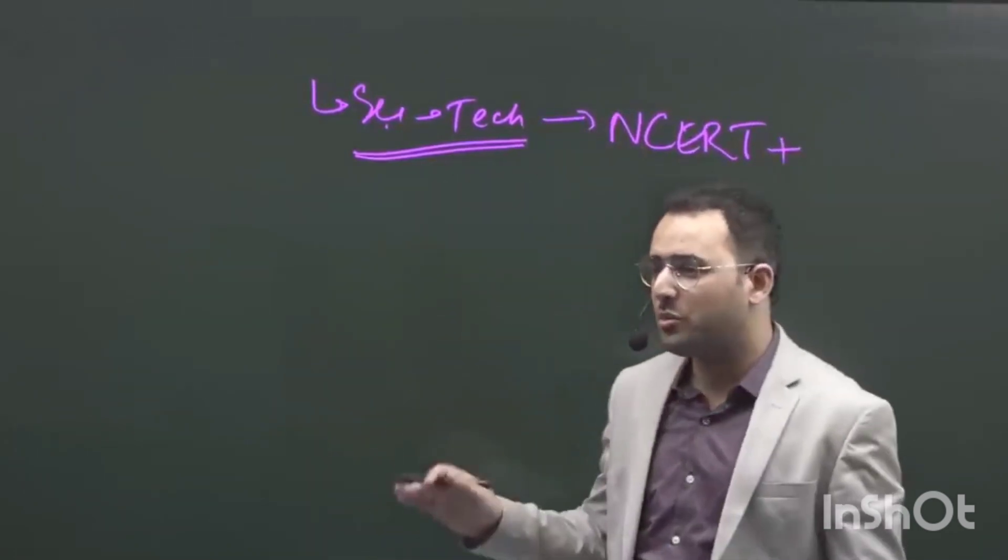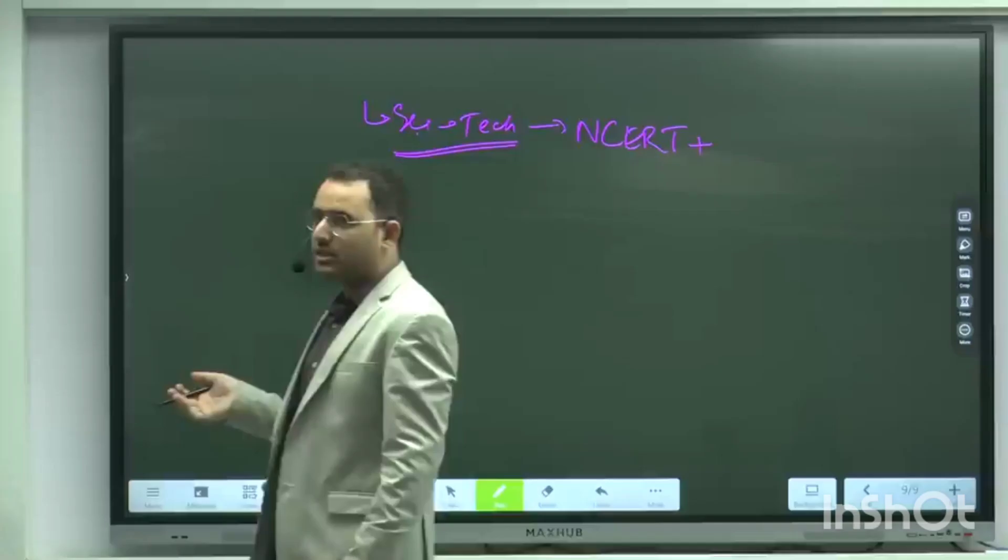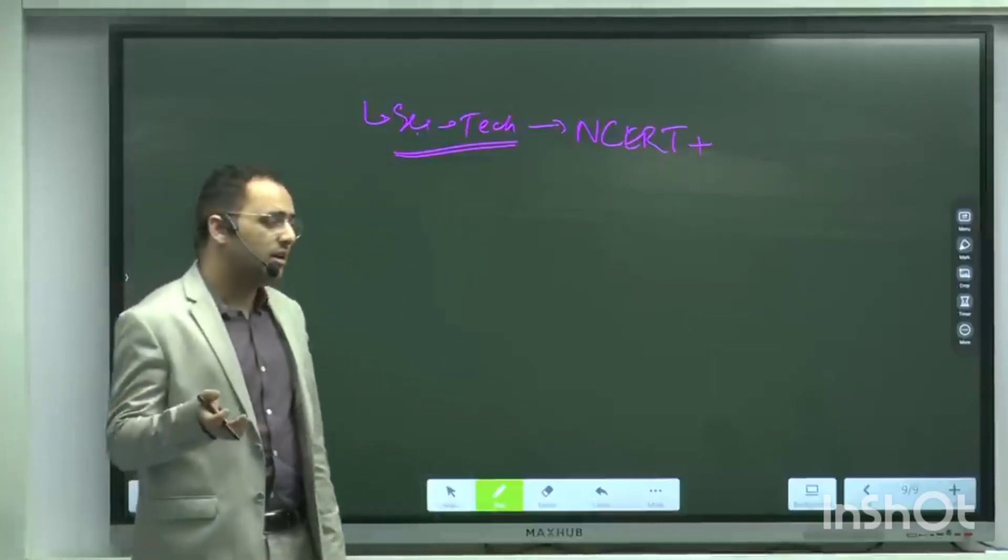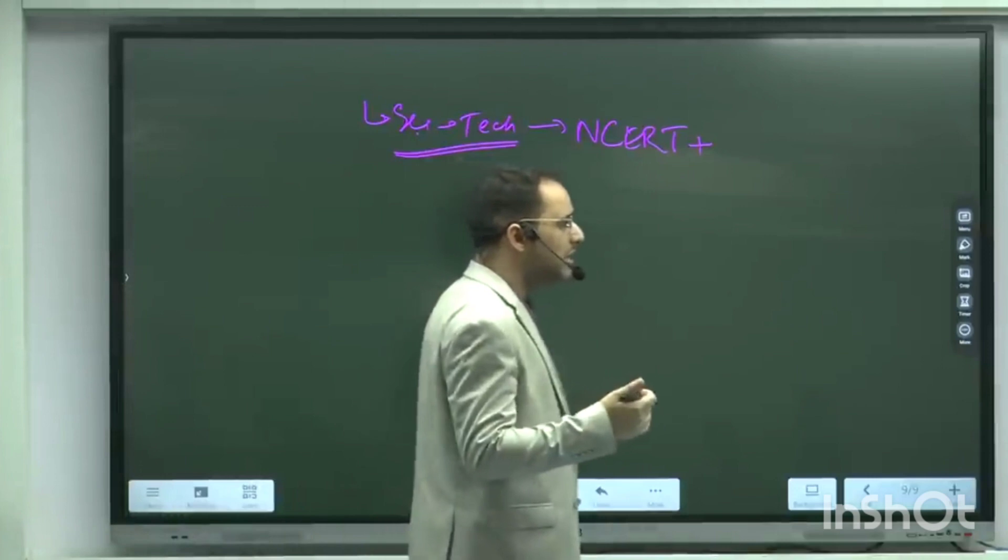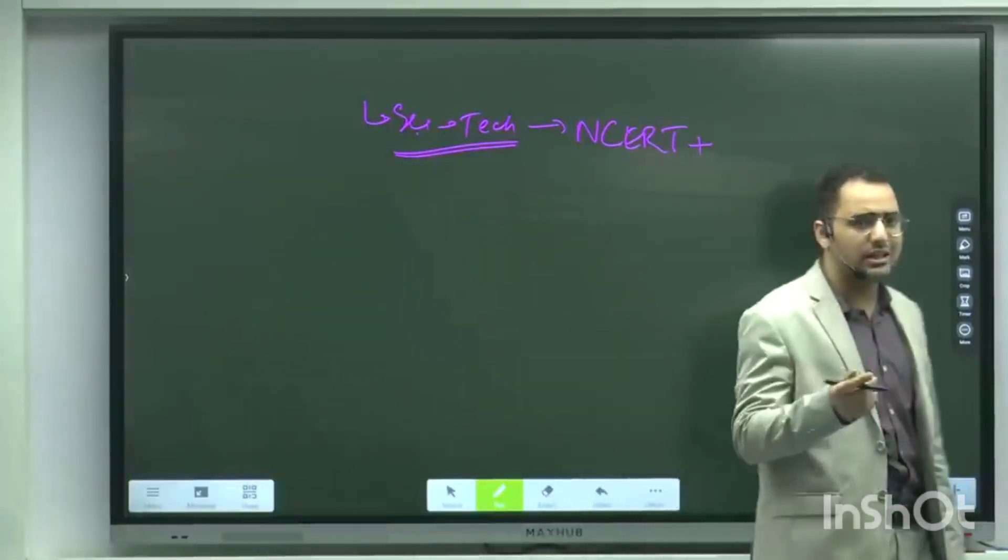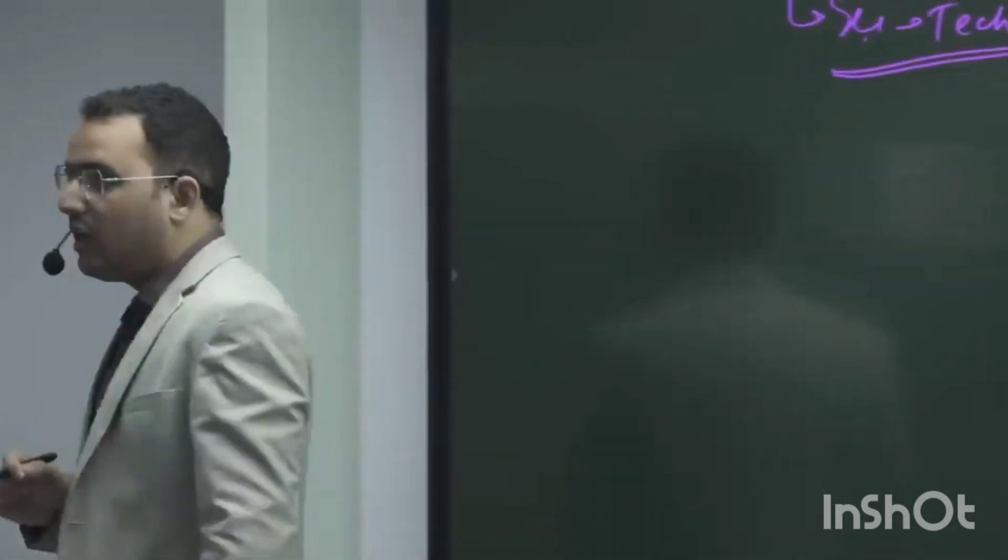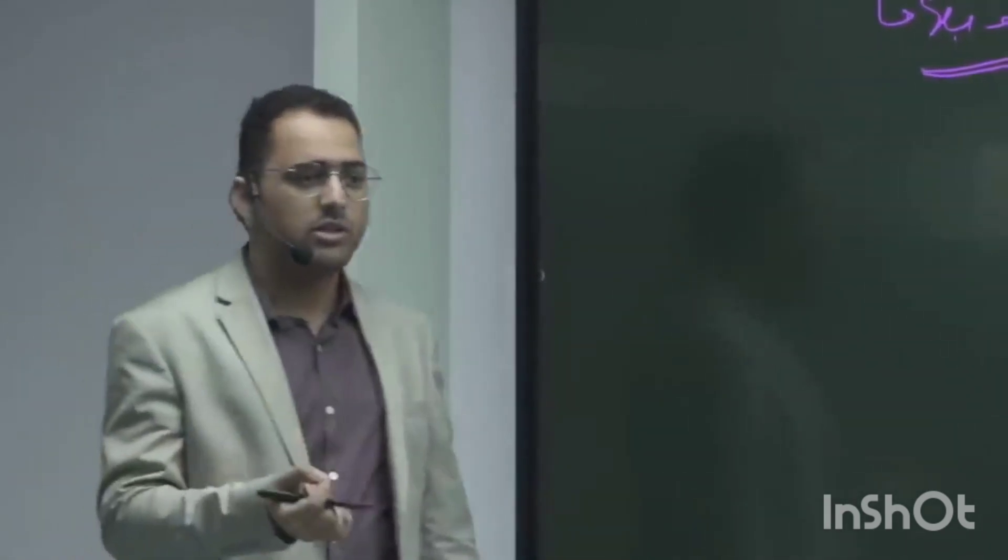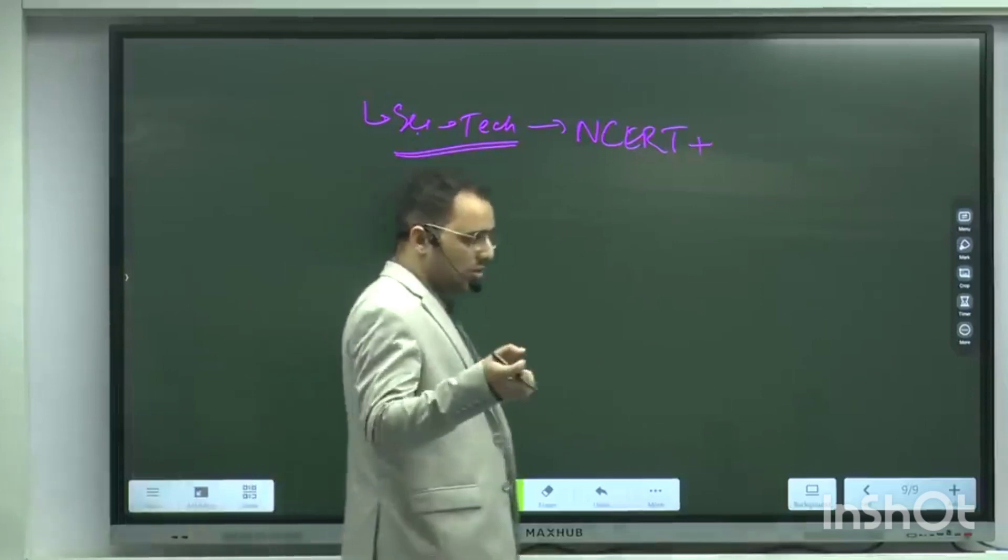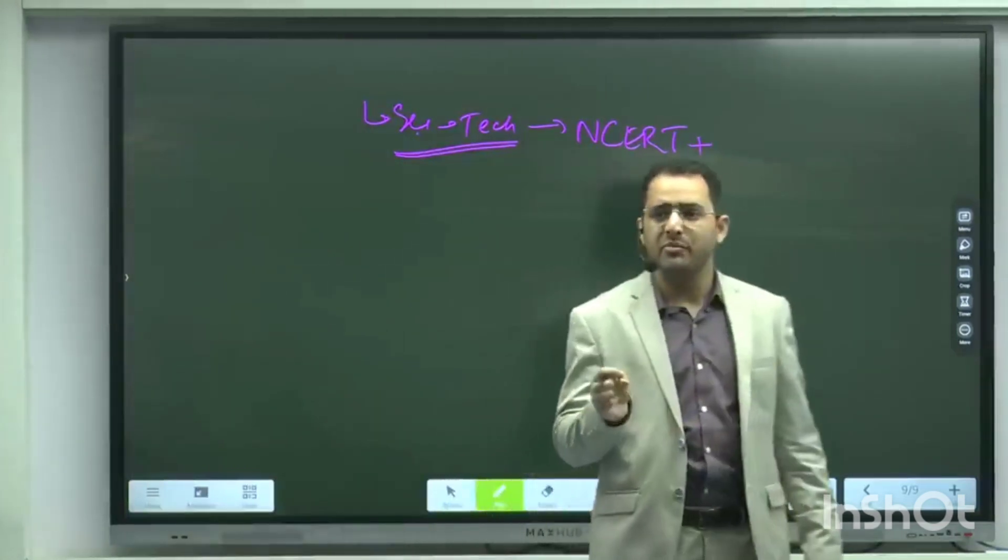Besides, science is more about current affairs, about the technological changes that are happening currently. I will give you an example - there are a lot of new things like nanotechnology, it's a domain; artificial intelligence, it's a domain; robotics is a domain. So these sorts of technological changes that are happening currently, these are asked.